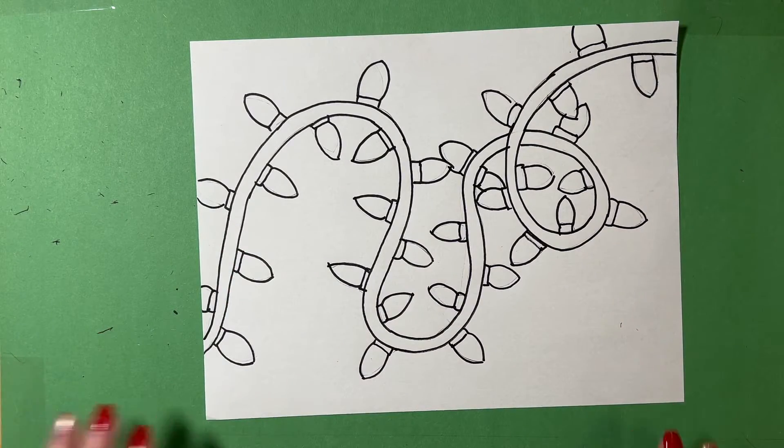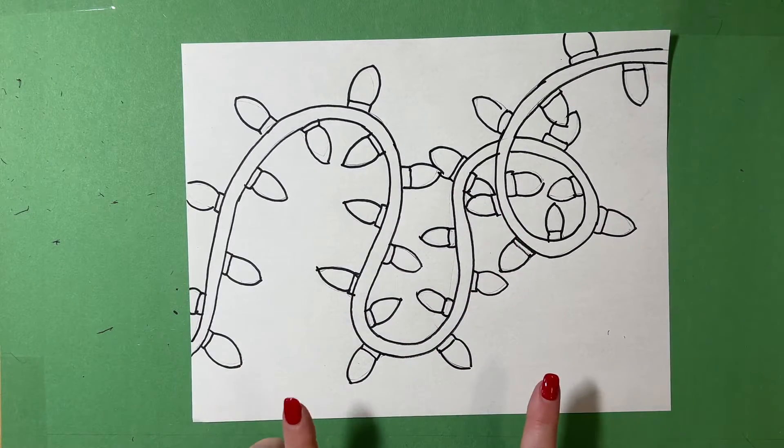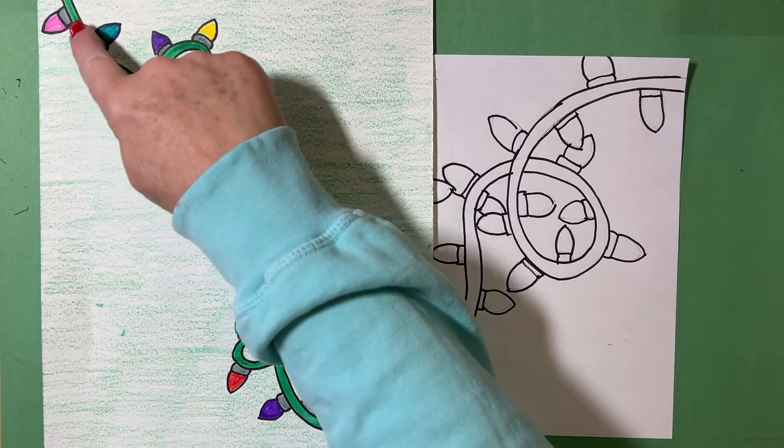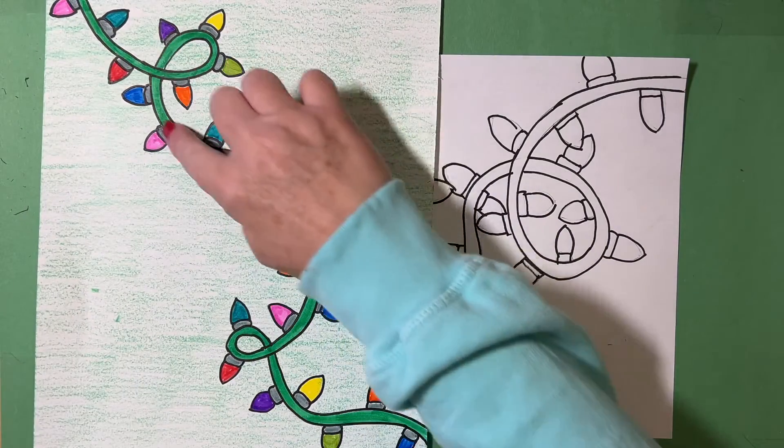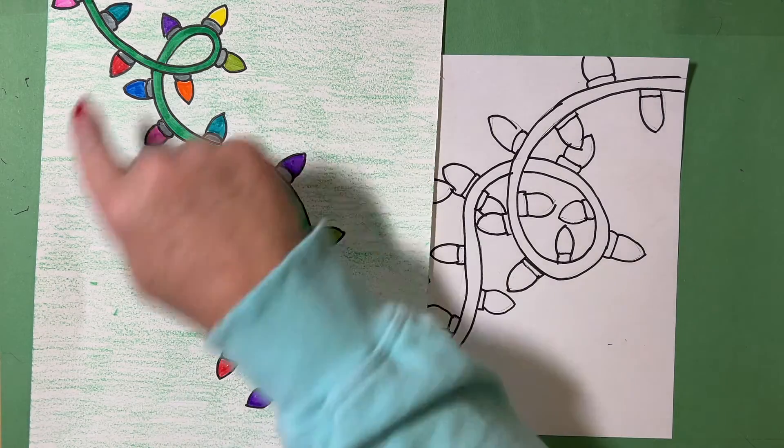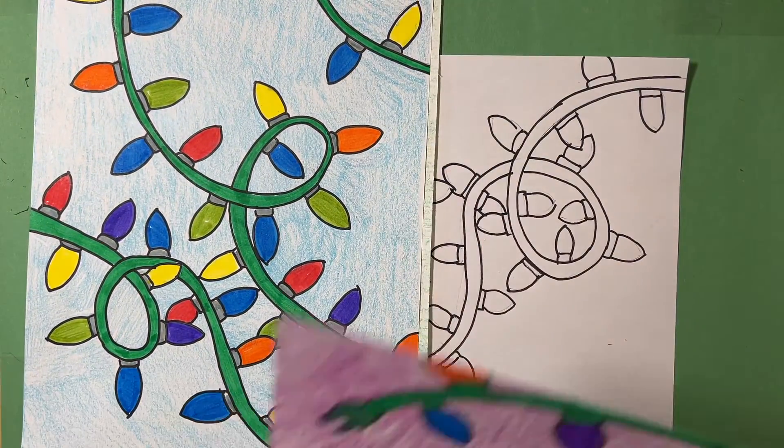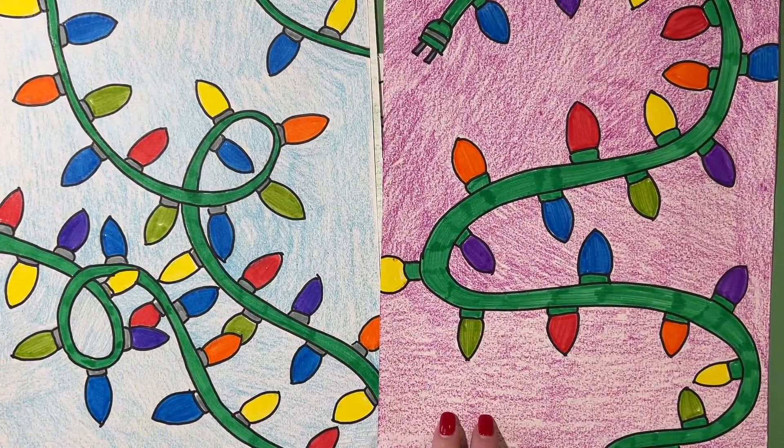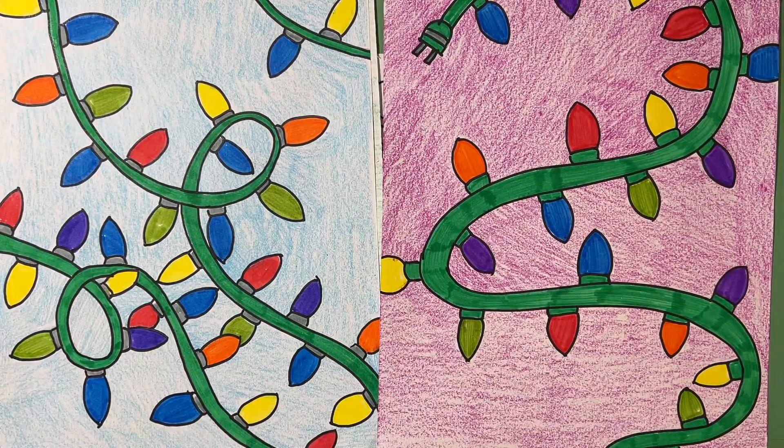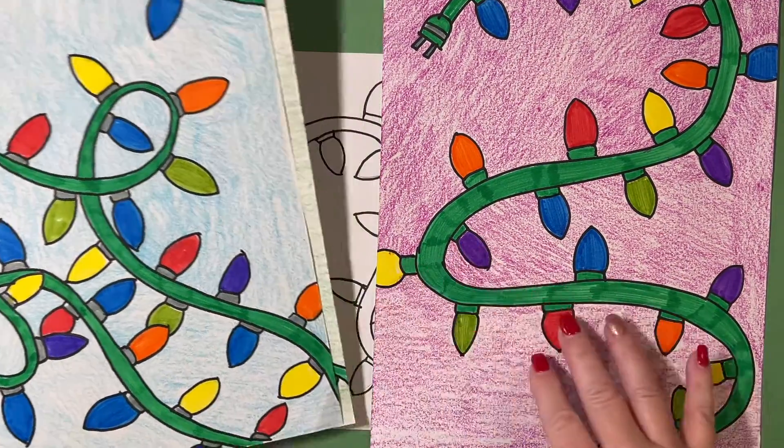Okay friends, so I have all my pencil lines erased. So I am now ready to color. You are going to color your lights with markers, but color your background with a crayon. So let's look at these examples again right here. For this, I used green for my strand of lights. I did gray for my socket and then different colors for my lights, all in marker. I chose a green crayon for my background. For this one, I chose a blue crayon for my background. And for this one, I chose a red violet or that raspberry color for my background. You can color your lights whatever color you want to color them. They can be a pattern or they can be random. Completely up to you.